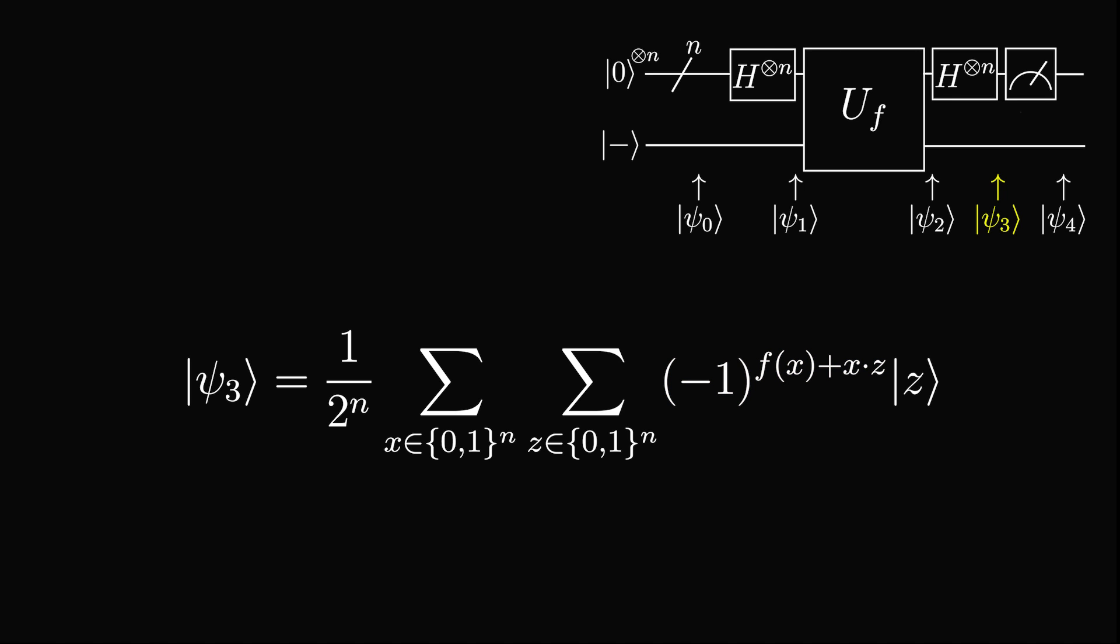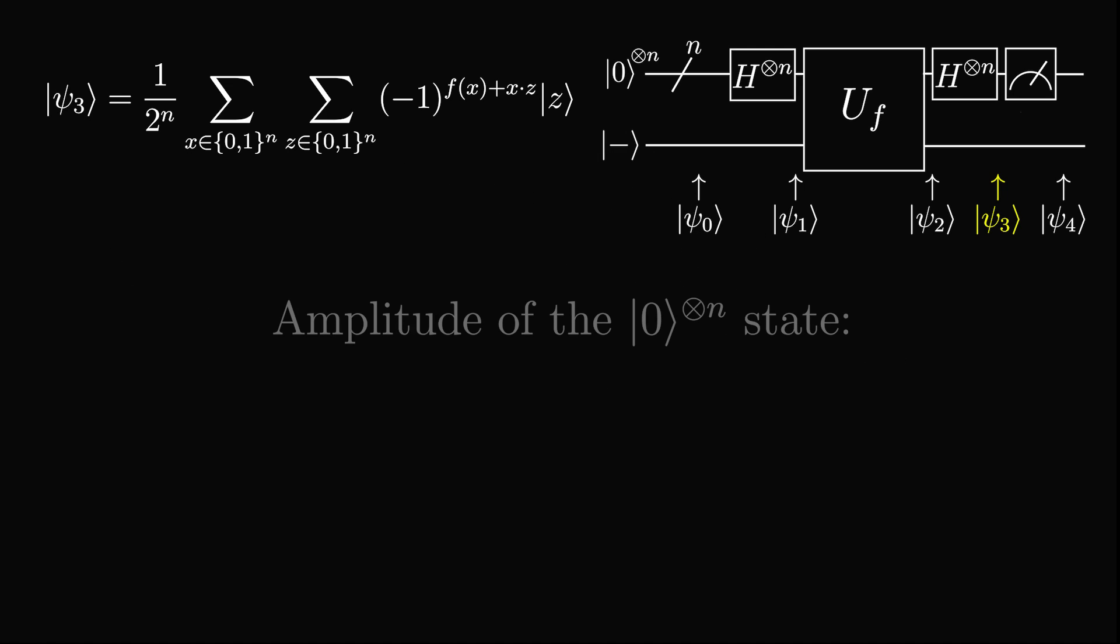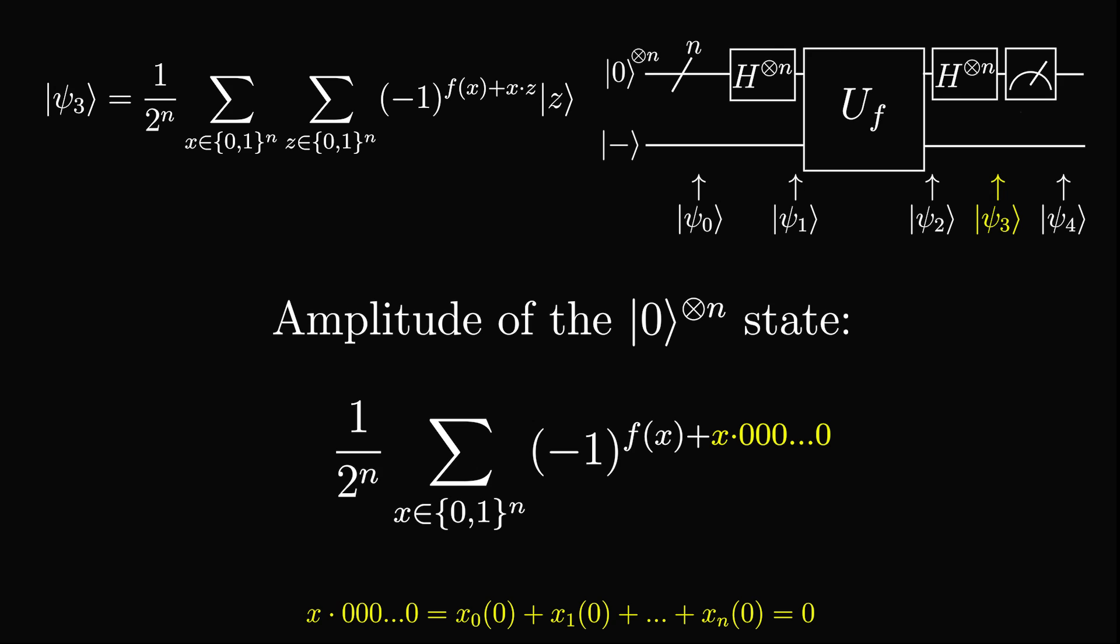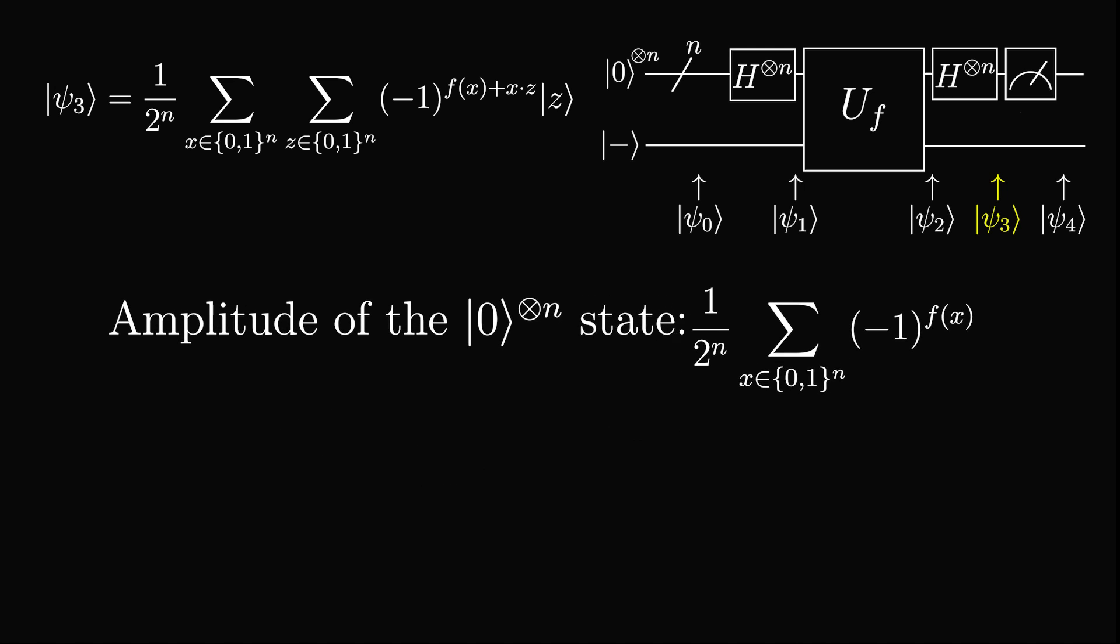Now the qubits are in this state. Let's consider the amplitude of the all zeros state. By expanding out the equation, we find that it is 1 over 2 to the power of n times the sum over all x's, negative 1 to the power of f of x plus the dot product of x with n zeros. Since the dot product with all zeros equals 0, the exponent of negative 1 becomes f of x.